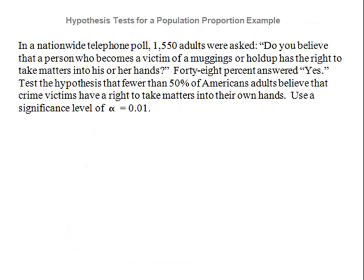Let's do an example. In a nationwide telephone poll, 1,550 adults were asked: Do you believe that a person who becomes a victim of a mugging or holdup has the right to take matters into his or her own hands? 48% answered yes. Test the hypothesis that fewer than 50% of American adults believe that crime victims have a right to take matters into their own hands. Use a significance level of alpha equal to 0.01.